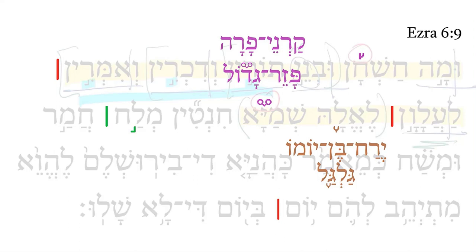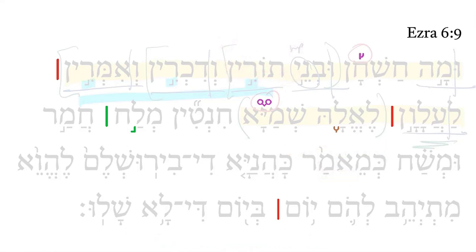So these are rare accents. We need to pay attention to them. In fact, Gesenius says that Yerach Ben Yomo and Carne Farah, which always go together, have a special function of pointing out something of exegetical significance. The Yerach Ben Yomo and Carne Farah require a Munach to stand before them, and that right there identifies this combination as a Munach plus Pasek.